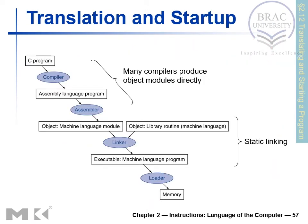This slide shows how high-level code gets translated into machine instructions. A C program is taken by the compiler, which generates an assembly language program. The assembler then takes that assembly code and generates machine language modules. The linker combines these modules with library routines to create an executable. Finally, the loader places the executable file into the appropriate memory location.